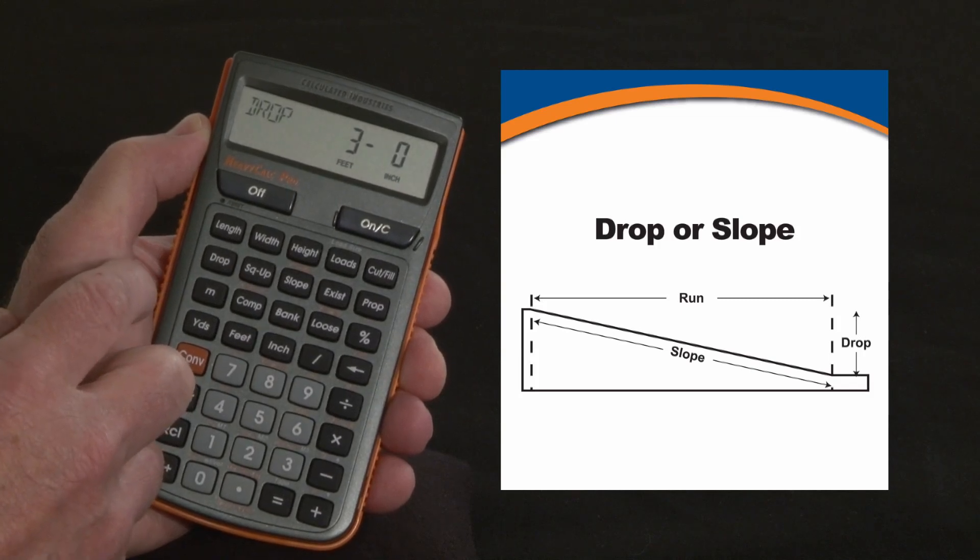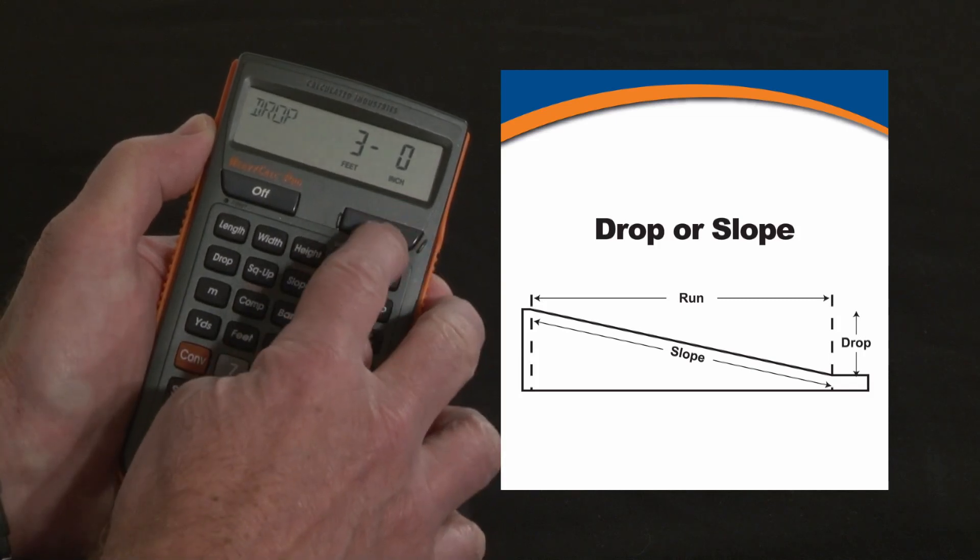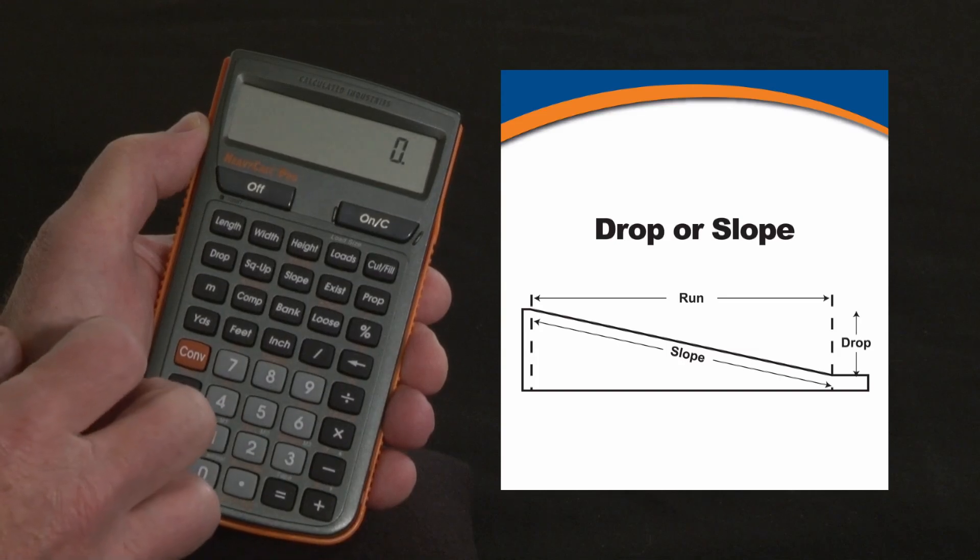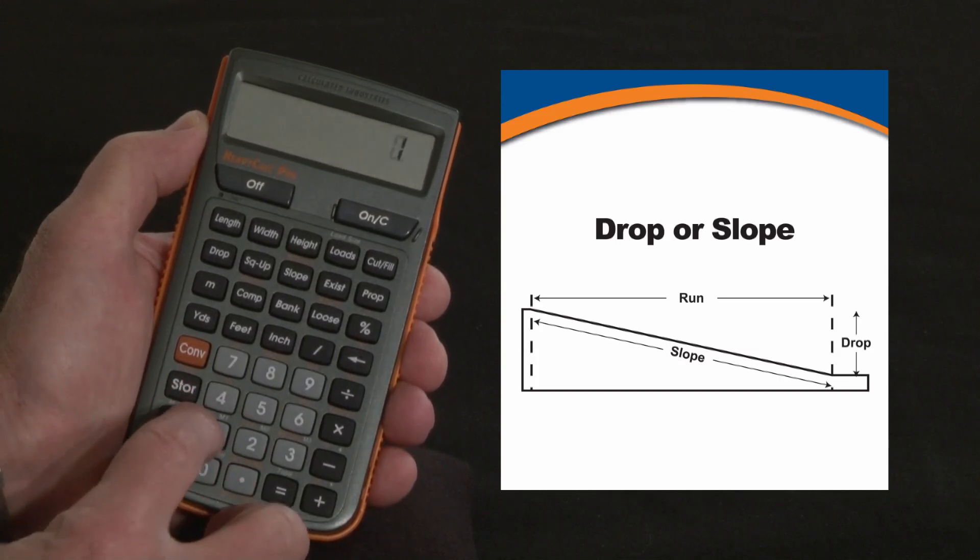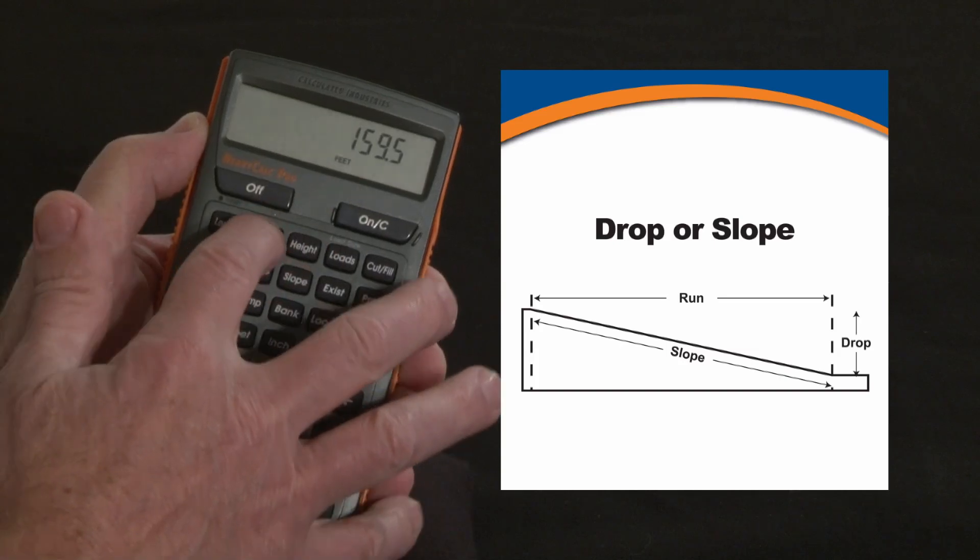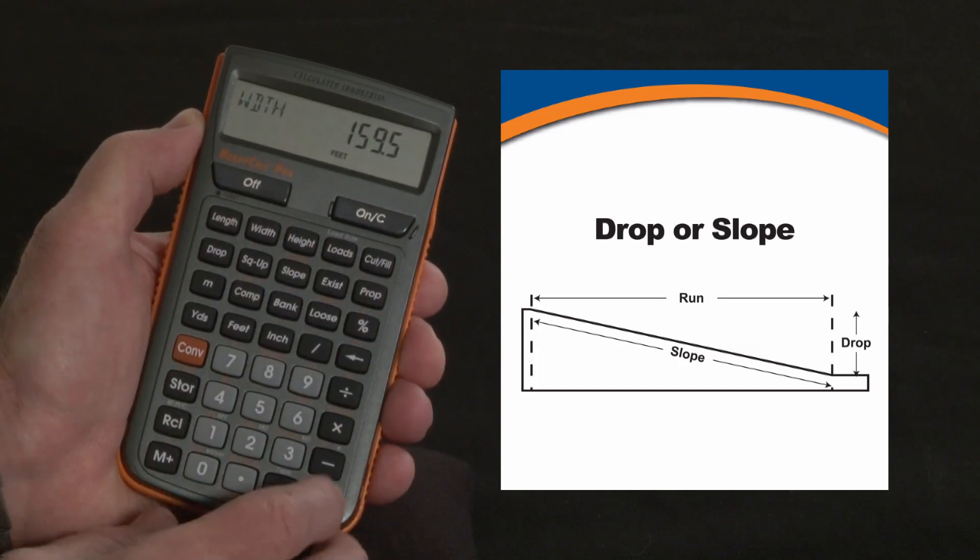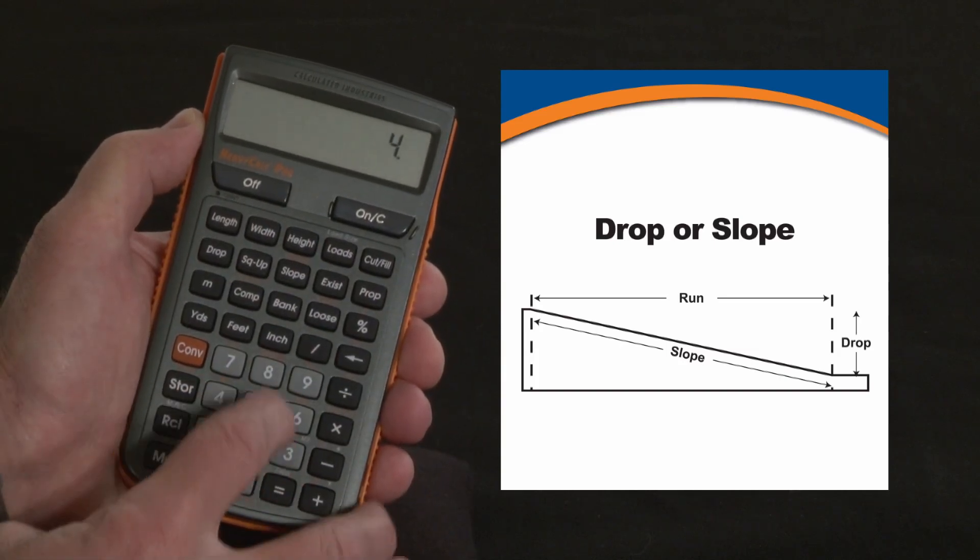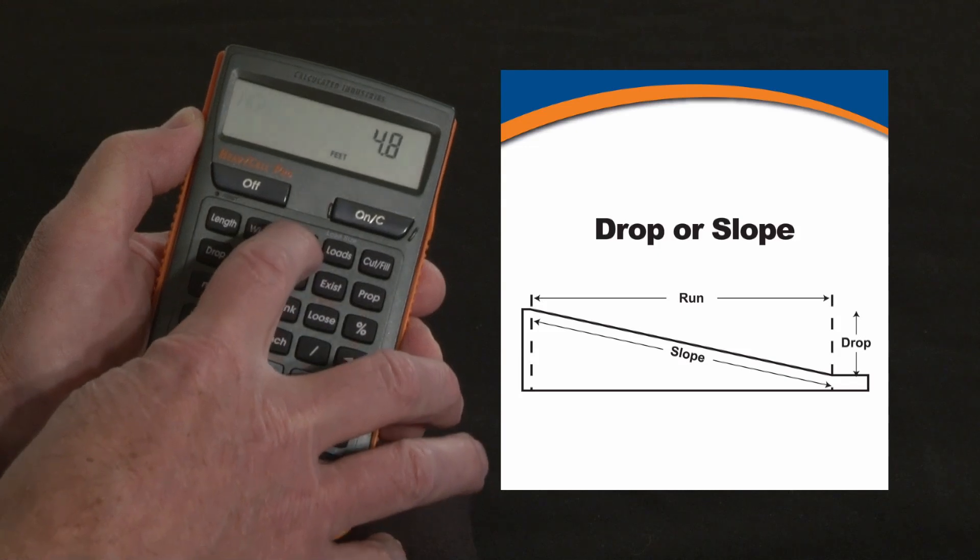There's two ways to calculate drops over a long distance. Another example, say you've got a site that's 159.5 feet across, and at the far end it's 4.8 feet lower than it is at this end. That's your height differential there.